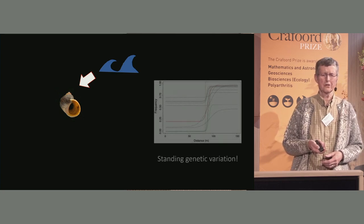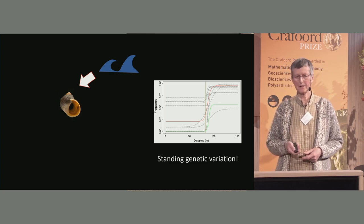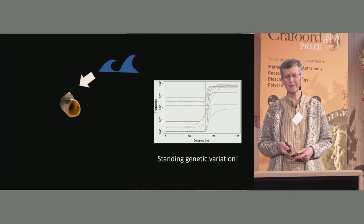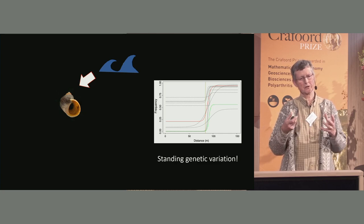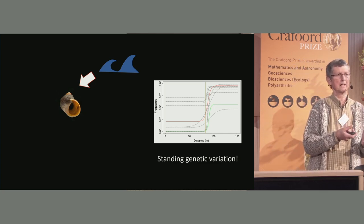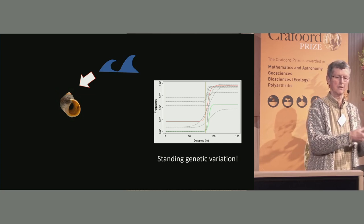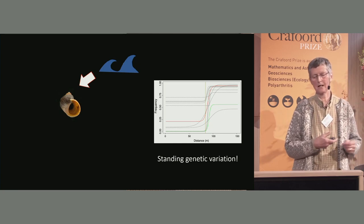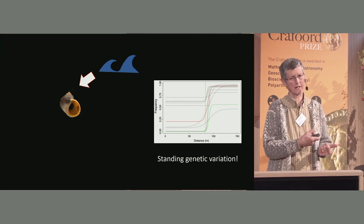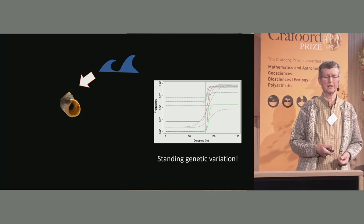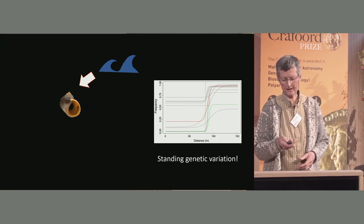An easy first explanation is that standing genetic variation is probably very important here. Even a crab population is not completely fixed for the alleles and inversion arrangements most highly selected in the crab environment. Many individuals are heterozygotes and carry the variation needed to build a population of the other ecotype in the future.